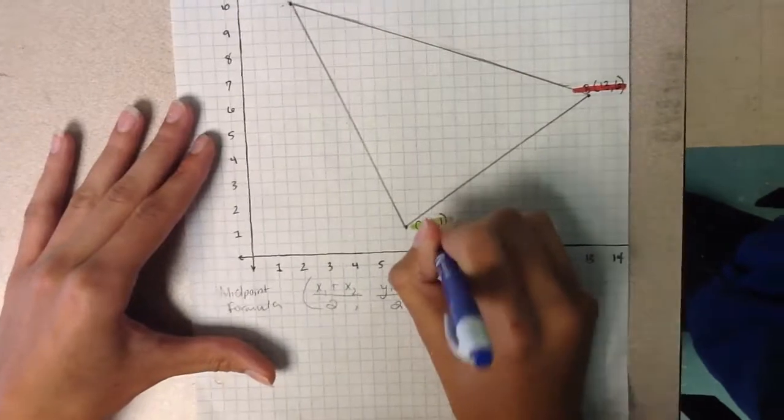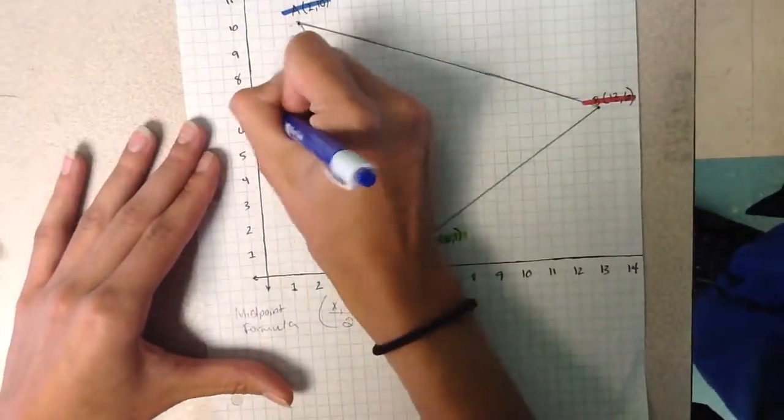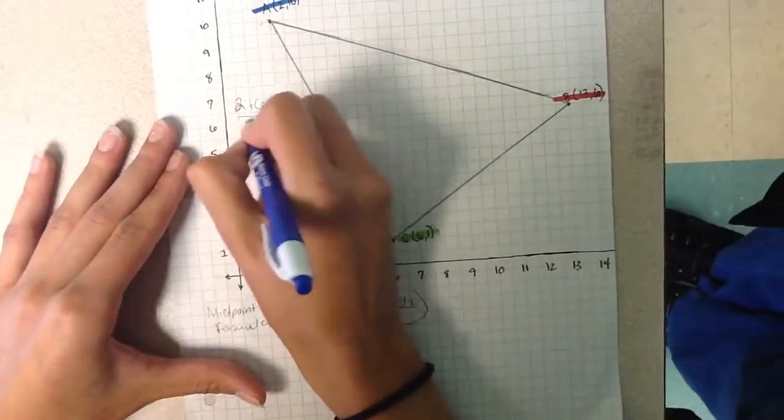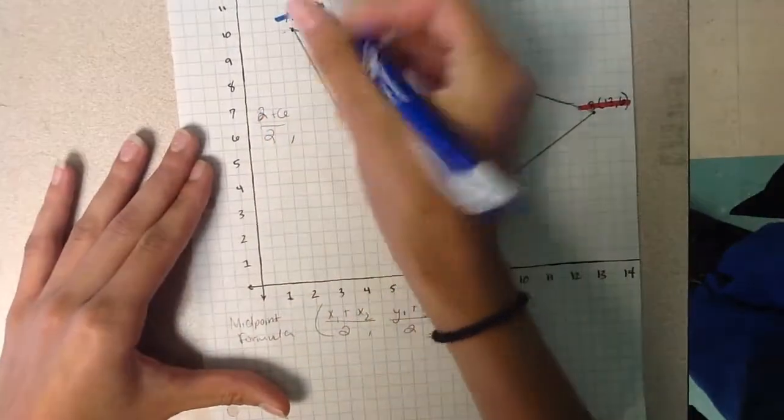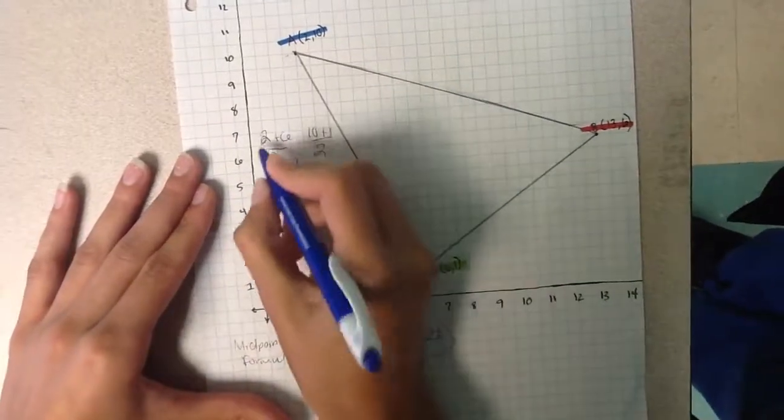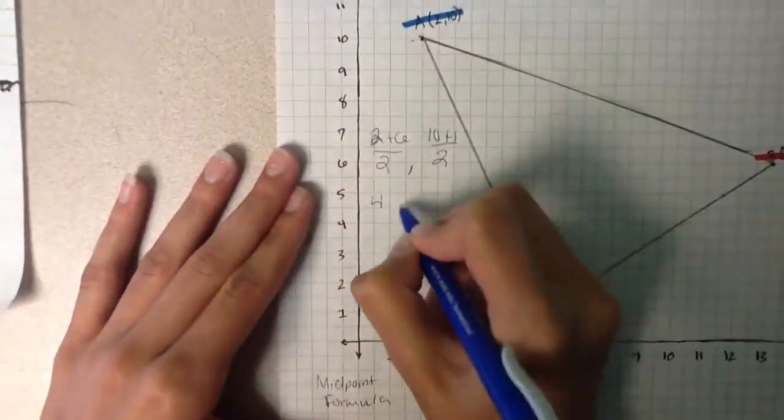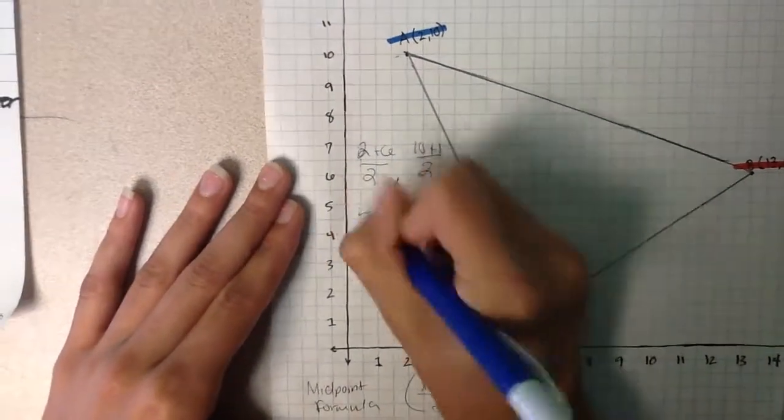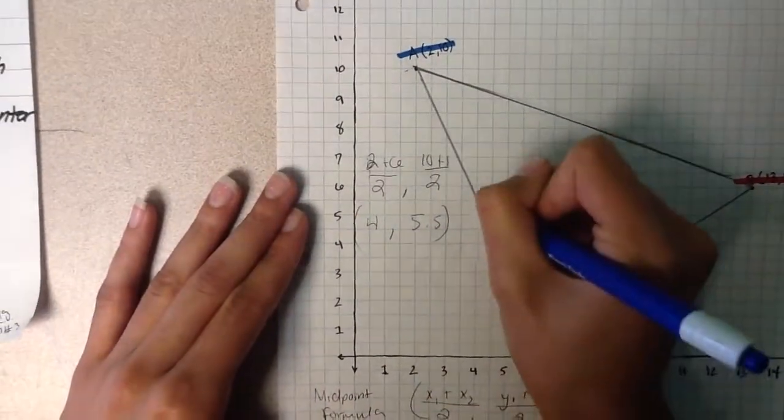For AC, you're going to do 2 plus 6, divide that by 2, and 10 plus 1, divide that by 2. This gets you 4, comma, and this will get you 5.5. So we know that this midpoint is located right there.